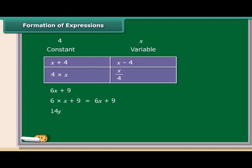Similarly, 14Y minus 30 is obtained by first multiplying Y by 14 and then subtracting 30 from the product. So children, you see these expressions were obtained by combining variables with constants. You can also obtain expressions by combining variables with themselves or with other variables.